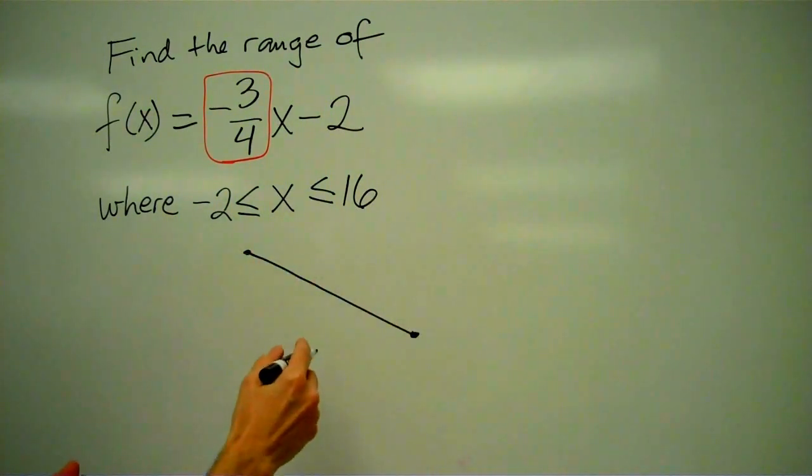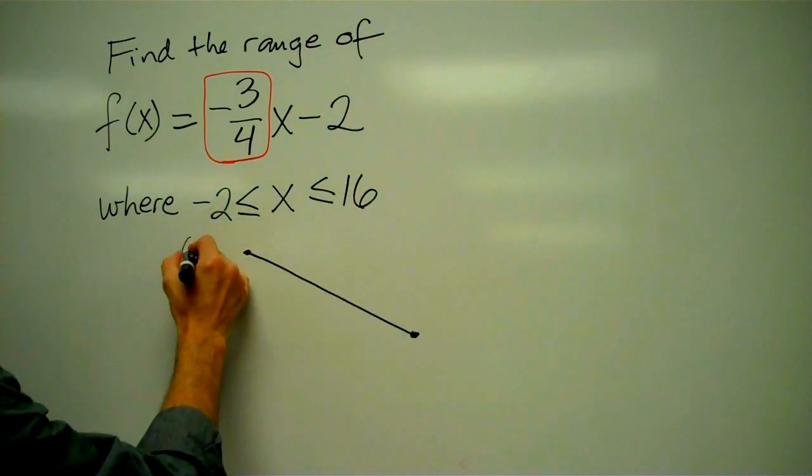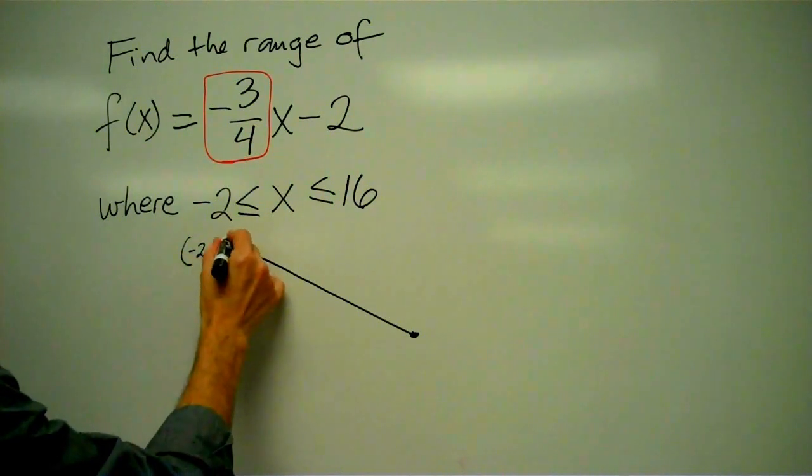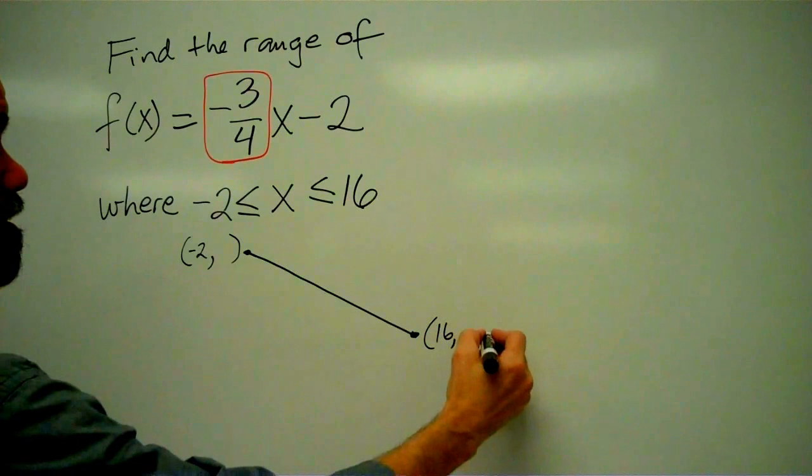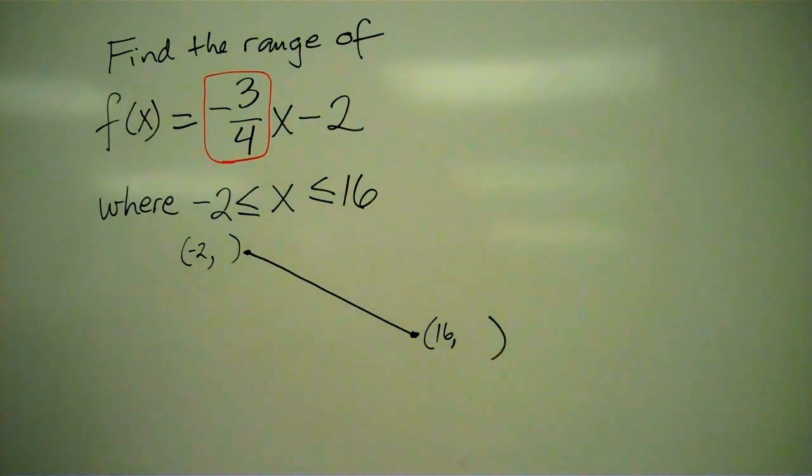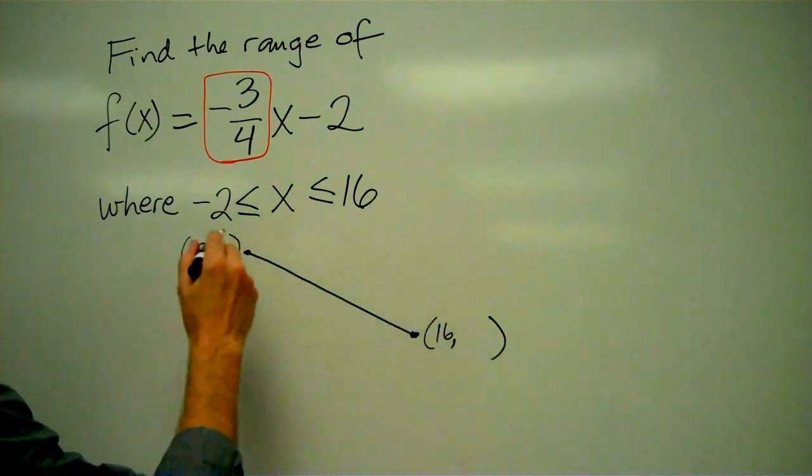Actually this is a segment, not a line. And the reason I'm drawing a segment is because we have a limited domain. This is going to go from negative 2 something, I don't know yet, to 16 something. Don't know that either. So now I guess what we need to do is find our somethings.